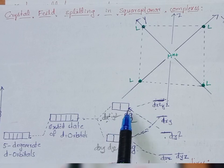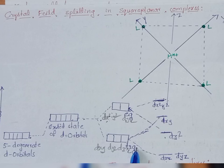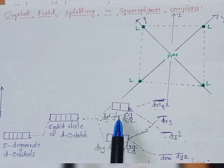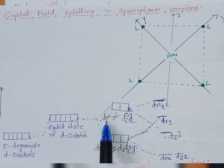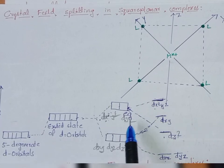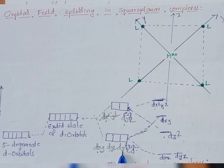The higher energy level is taken by the EG set of orbitals and the lower energy level by the T2G set of orbitals. The EG set contains two orbitals: dx²-y² and dz². The T2G set contains three orbitals: dxy, dyz, and dzx.